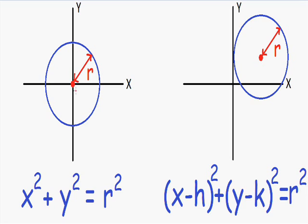On the right-hand equation, instead of x squared we have x minus h squared, and instead of y squared we have y minus k squared. This is the equation of a circle if the center is not at the origin. The h in this formula is the x-coordinate of the center, and the k is the y-coordinate of the center.